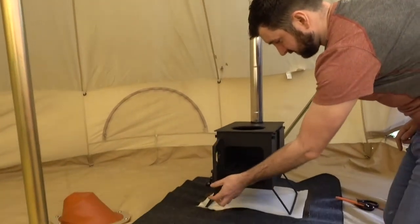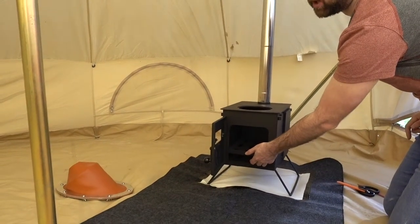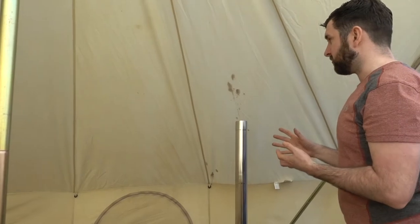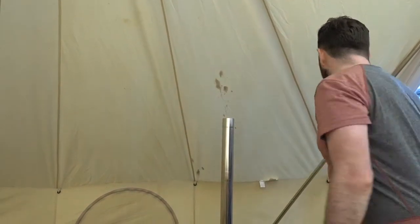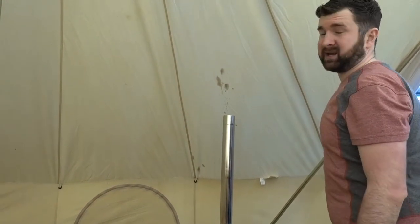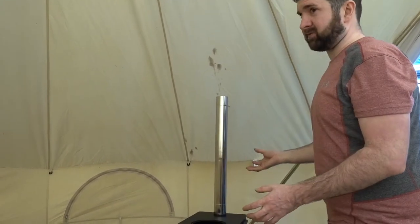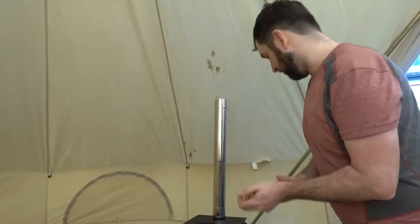Number one, you can empty the ashtray quite easily that way. Number two, if there is an emergency or we do have any problems, say getting a bit of smoke out of it, we can easily open the doors to ventilate the tent. Some people do do little cheats like open a window and shove it out through a window. We're not going for that, we're gonna do it properly.